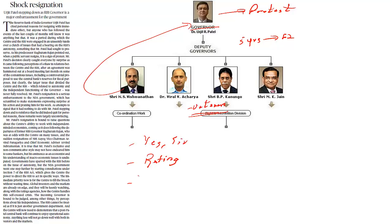Any government is more into short-term growth — they basically believe there needs to be a lot of development within the span of 5 years. They do not look at the long-term approach or what could be the implication 5 or 10 years down the lane. But it is the RBI which looks at growth prospects in the future. Currently, in the election season, the government is discounting long-term inflation effects in the guise of short-term growth. These are the possible implications we have to understand in terms of the resignation of Urjit Patel.